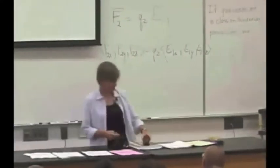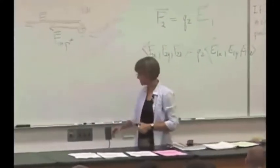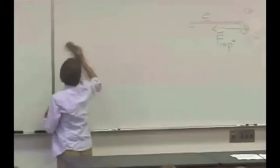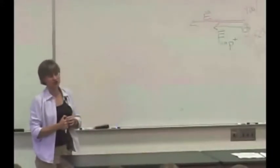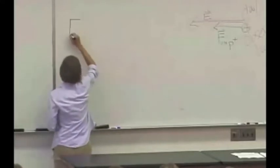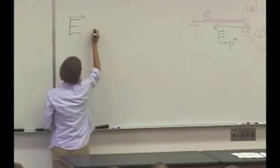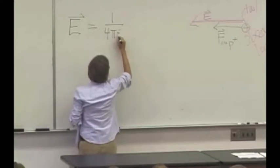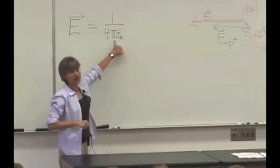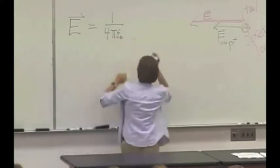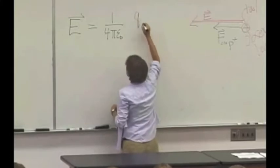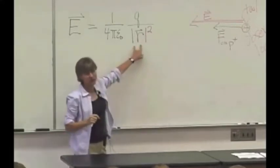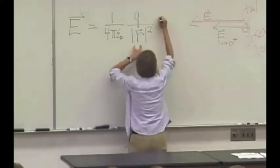We, in fact, do have a vector equation for the electric field at some location created by a point charge, and it looks a little scary. It looks like this: E at some location, so there's this implicit R here, is equal to a constant, which is written as 1 over 4 pi epsilon sub-zero. It's sort of a funny way to write a constant, but there's a reason for that. That Q of the particle divided by the magnitude of the relative displacement vector squared, R hat.